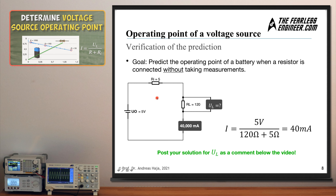Now let's verify our results by computing the current flow using this equation. That is 5 volts divided by 125 ohms (120 Ω + 5 Ω), which gives 40 milliamps. Checking this against the simulation confirms 40 milliamps of current flow as well. Our prediction is correct — we have arrived at the correct current flow through the load resistor.